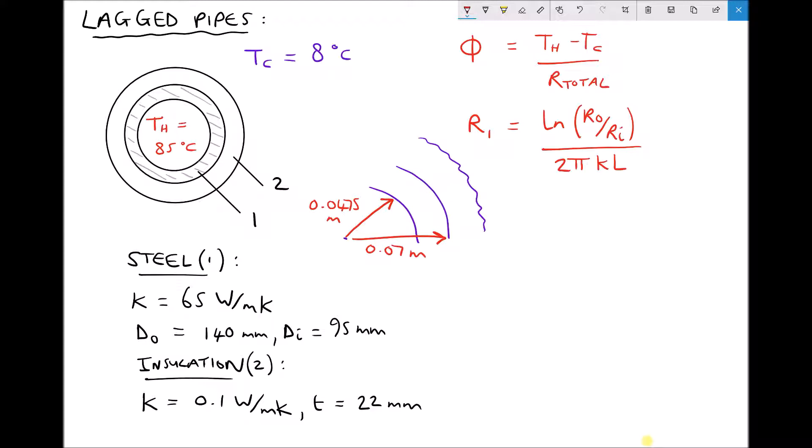Now finally we need the radius of the insulation. We've specified that the insulation has a thickness of 22mm. So this distance here is 22mm. 22mm divided by 1000 is 0.022m. Therefore this distance from here to here must be 0.092m. It's basically the outside radius of the pipe plus the thickness of the insulation. But we must remember to work in meters.